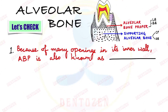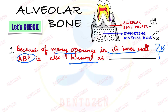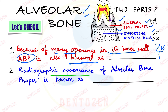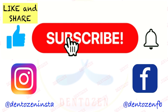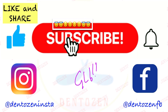To review: the other name for alveolar bone proper because of perforations in its wall is cribriform plate. The two main parts of alveolar bone are alveolar bone proper and supporting alveolar bone, with their further subdivisions. The radiographic term for alveolar bone proper is lamina dura. Type 1 spongy bone has regularly arranged horizontal trabeculae seen in mandible; type 2 has irregularly arranged trabeculae seen in maxilla. If you enjoyed the video, like and share it — keep watching, keep learning, and good luck for your exam.